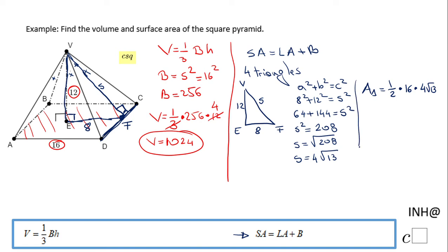So the area of that face VDC is 8 times 4, that will be 32, 32 square root of 13. That's one triangle. And if you remember, the lateral area means 4 triangles, so I'm gonna have 4 times 32 square root of 13, which will be 128 square root of 13.